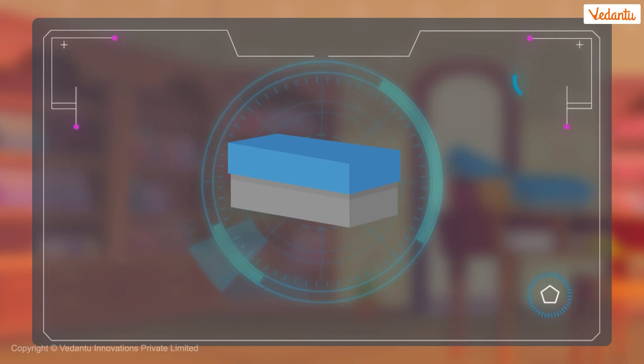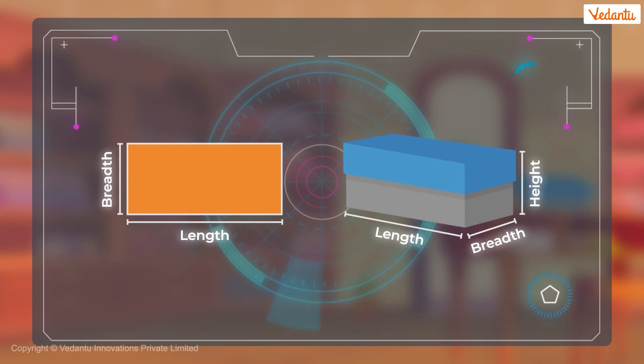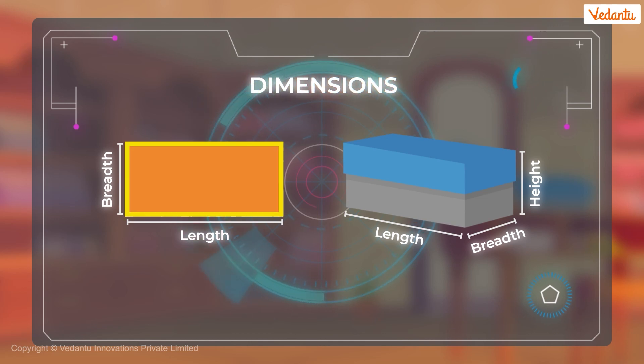How is it different? A rectangle only has a length and a breadth. But this box has a length, breadth and height also. Measurements such as length, breadth and height have a special name called dimensions. A rectangle only has two dimensions, length and breadth.